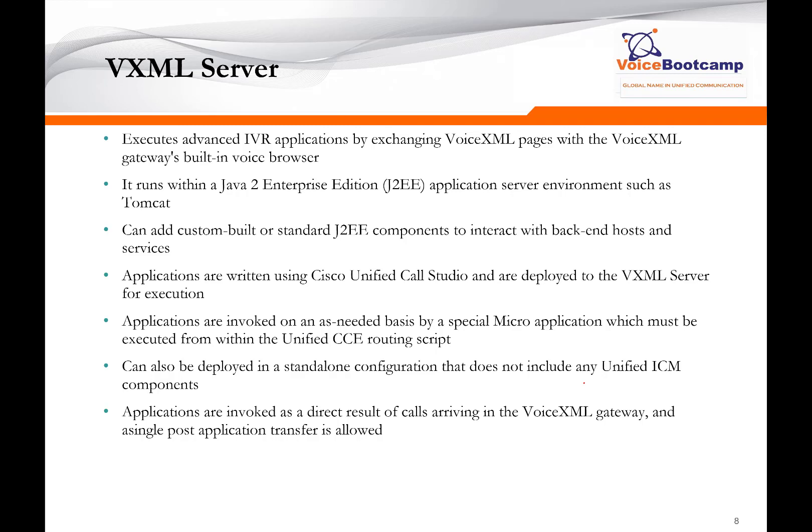Applications are written using call studio and are deployed to the VXML server. That application will then be browsed by the Cisco IOS gateway, where the instructions come from the CVP call server itself. Applications are invoked on an as-needed basis by special micro-applications, which must be executed from within the UCCE routing script. You can also deploy the CVP VXML server as a standalone configuration that does not require ICM components at all. In standalone mode, applications are invoked as a direct result of a call arriving on the VXML gateway, mapping a local dial pair that triggers an HTTP request to the VXML server.